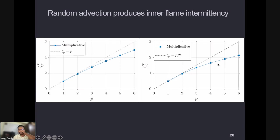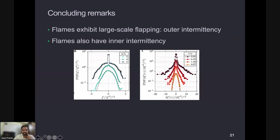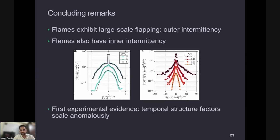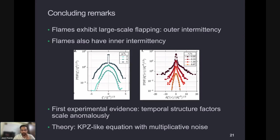To conclude: the main thing we've seen is that yes, flames have this large-scale outer intermittency. But if you go closer to the flame where things seem boring, it actually still is intermittent — one needs to look at the structure factors to reveal that. We've shown the first experimental evidence for this kind of inner intermittency. The story is a familiar one to those coming from turbulence, and more recently what we're doing is developing a theory of this using a KPZ-like equation, but accounting for the multiplicative spatial-temporal noise. Thank you very much for your attention — I'll be happy to take questions.